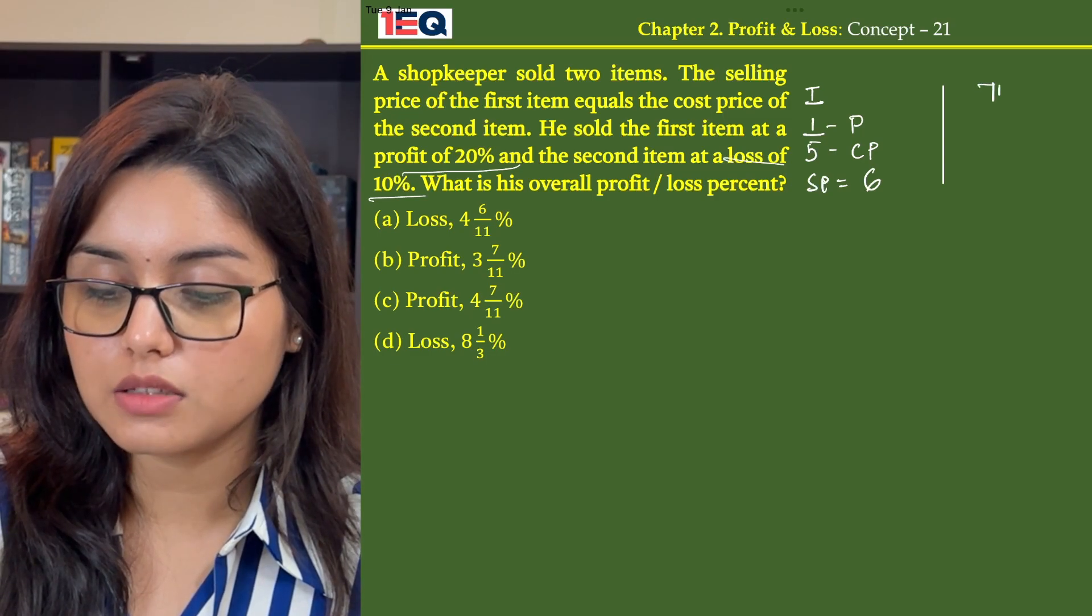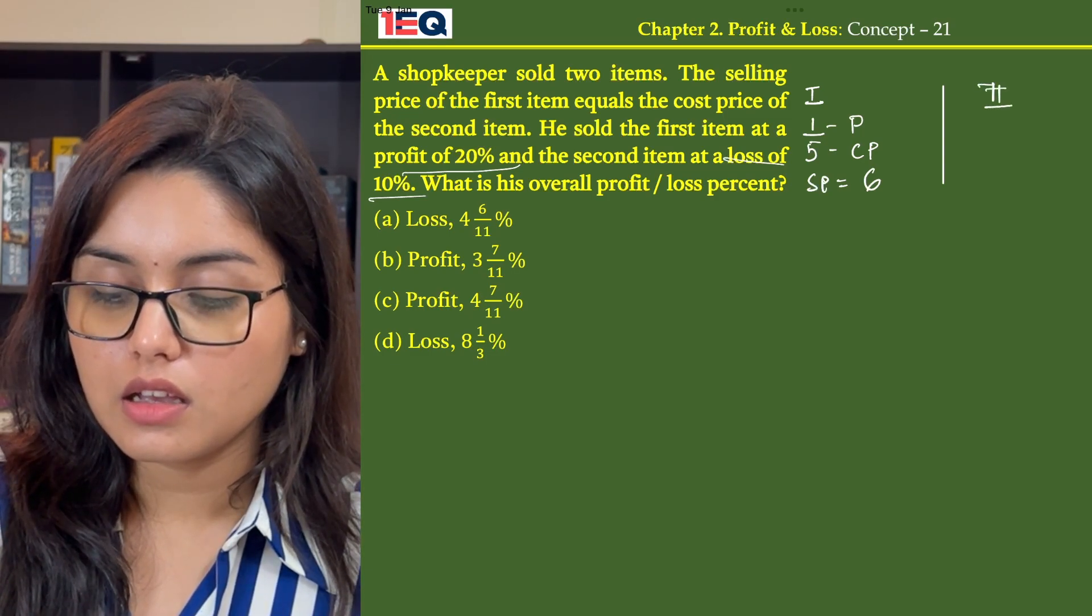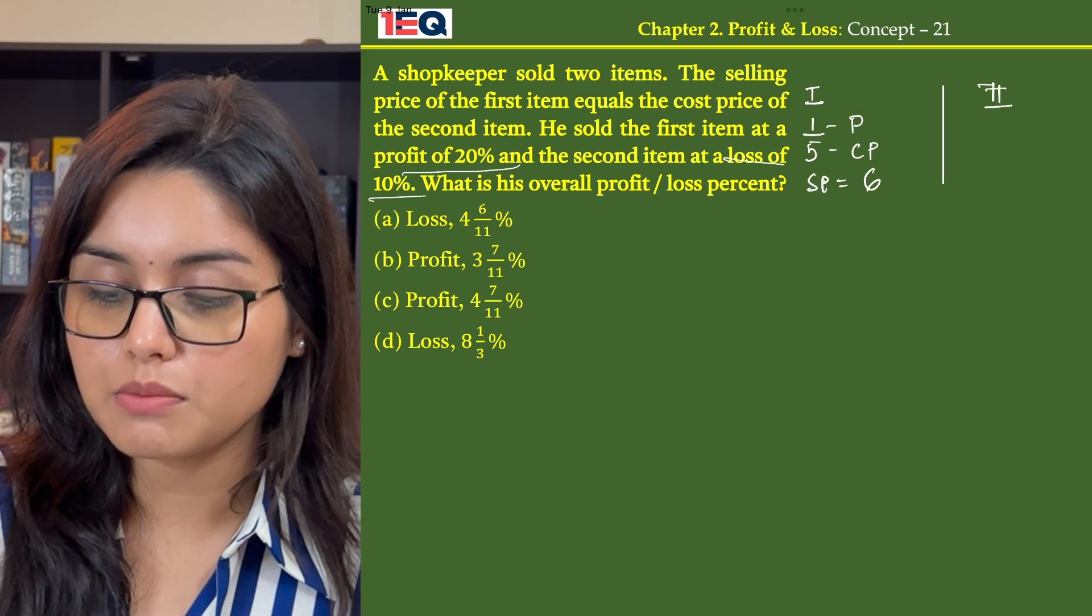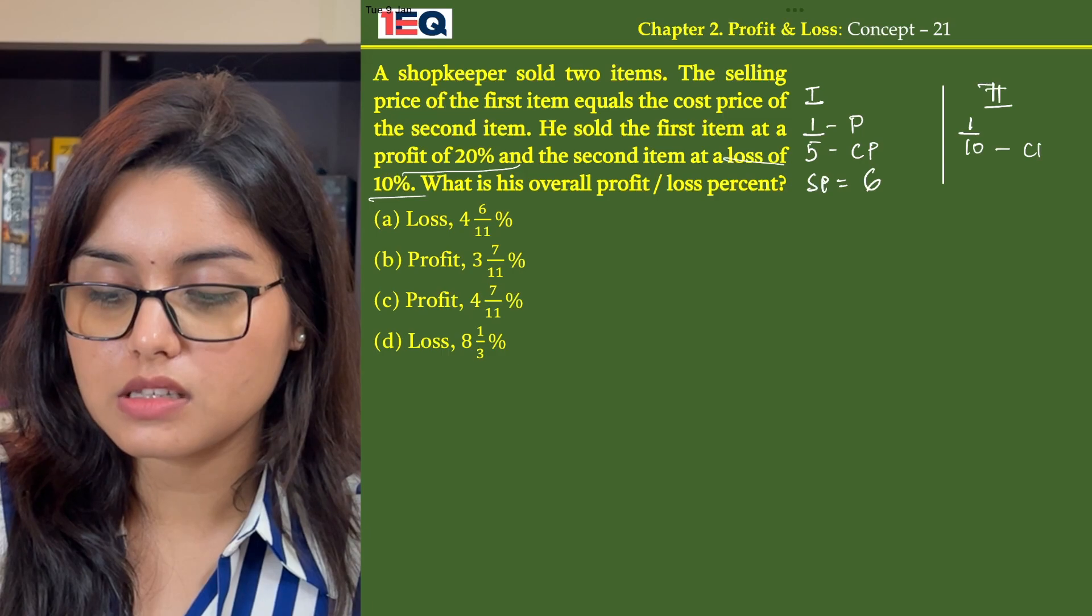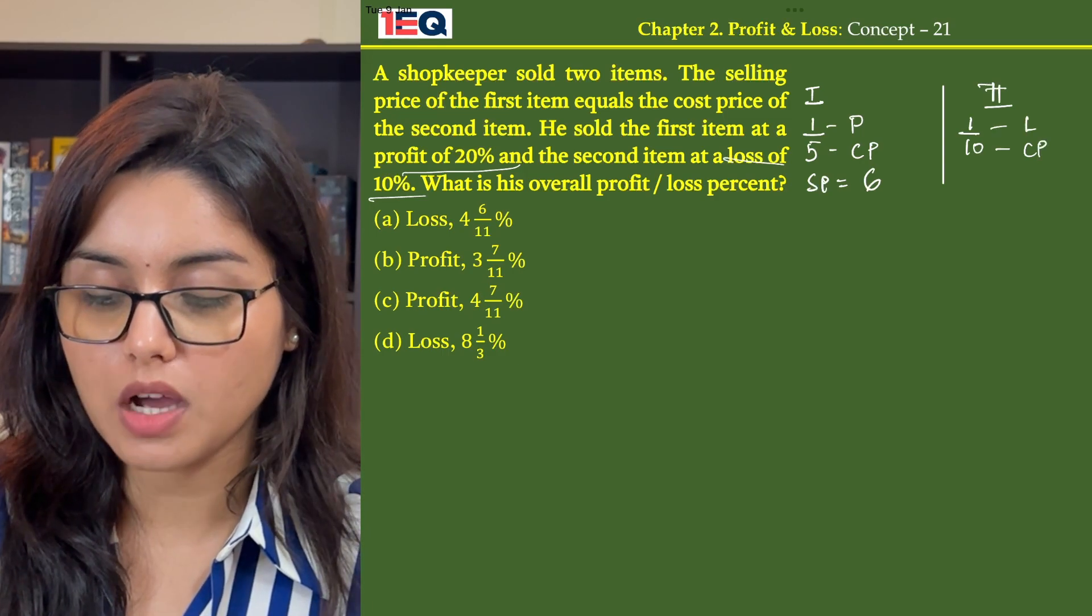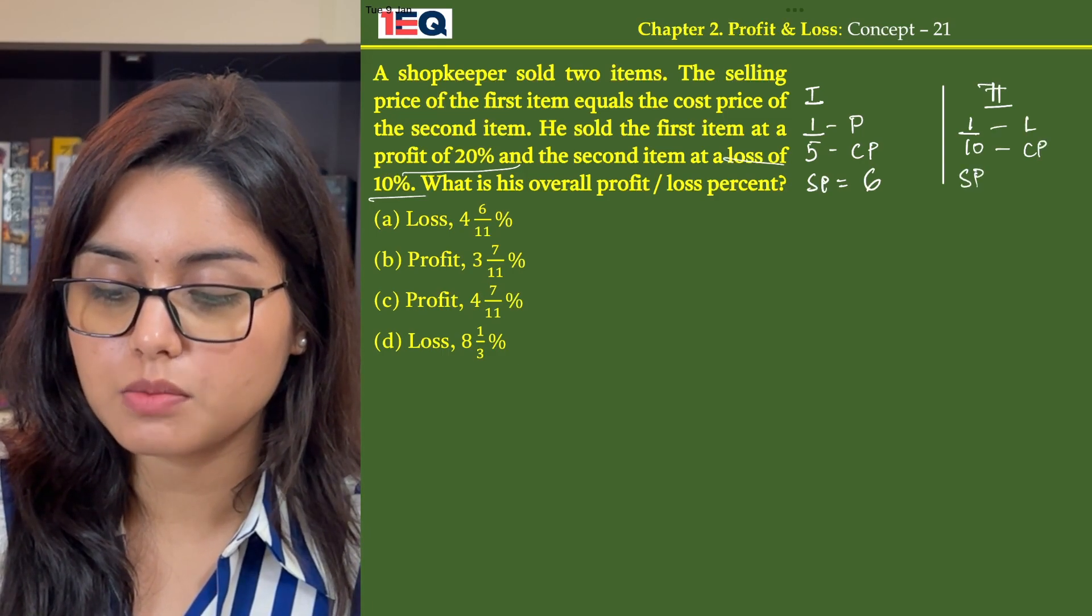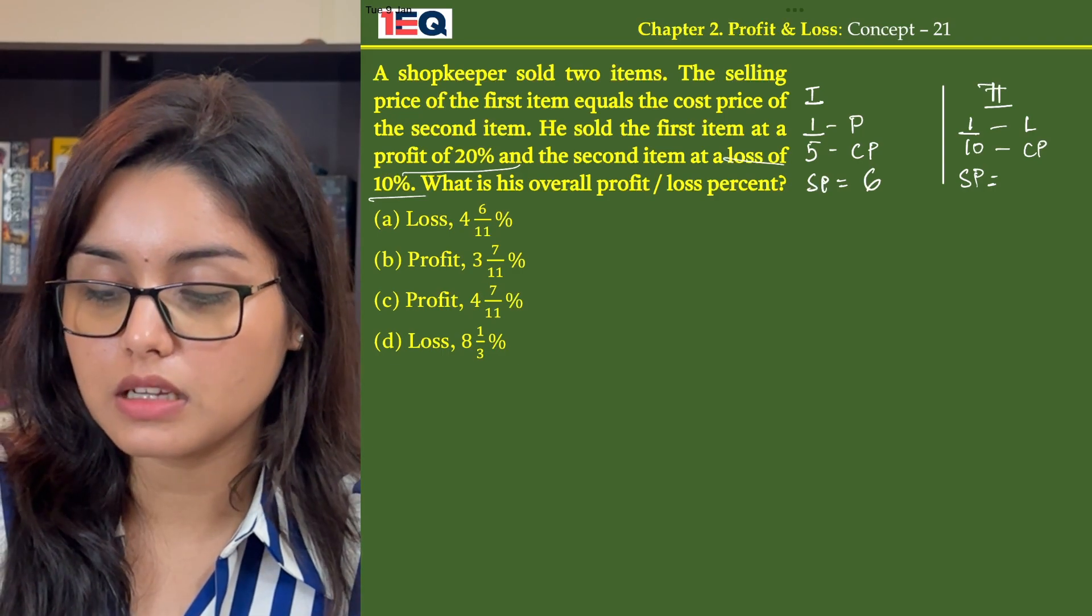In case of item 2, he sells it at 10% loss. So a 10% loss would mean 1 by 10, where my CP is 10 and loss is 1. So selling price becomes 10 minus 1, that is 9.